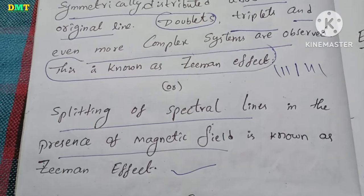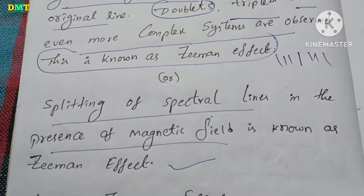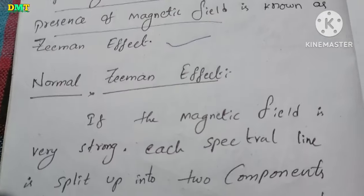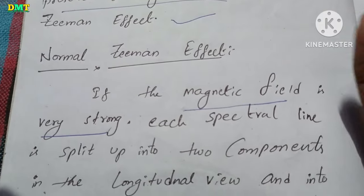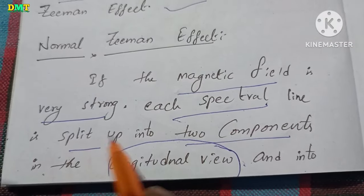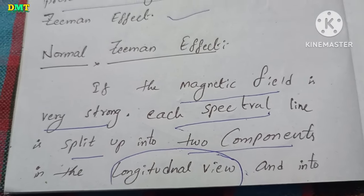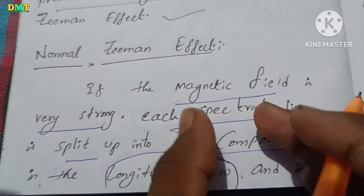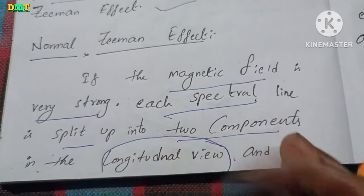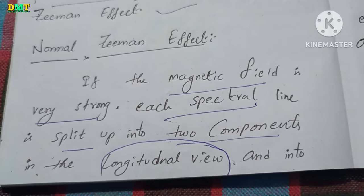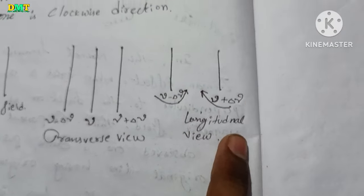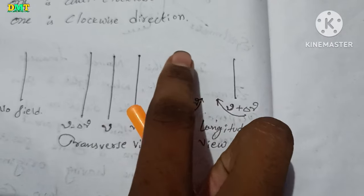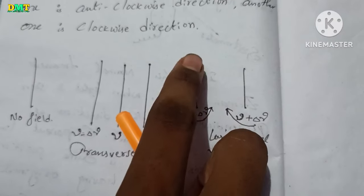Now we will look at the Normal Zeeman Effect. When the magnetic field is very strong, each spectral line is split up into two components in the longitudinal view. In the transverse view, it is split up into components in each direction.